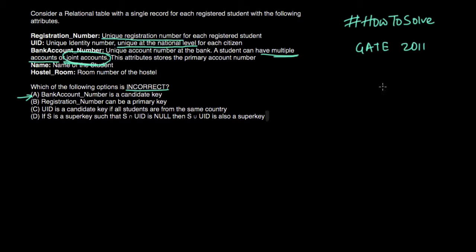Now we have been also given that students can have joint account. So let's say two students s1 and s2 have joint account. And the account number is let's say one two three. In that case there will be a problem if they don't have other accounts. So for both student s1 and s2 the account number will be same. So if account number is not unique it cannot serve as candidate key. So this is wrong. And as it is wrong it is our answer.